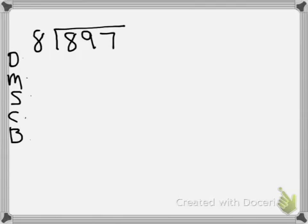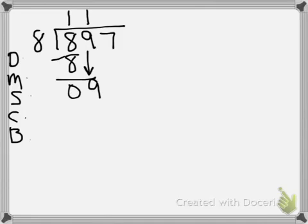So 8 times what gets us close to 8? Well most of them hopefully will say 1. And I'm just going to go ahead and solve through this. Check — 0 is definitely less than 8. I'm going to bring down the 9. How many 8's can I get out of 9? We'll do 1. 8 times 1 is 8. Subtract. I get 1 again — is 1 smaller than 8, my divisor? Yes.